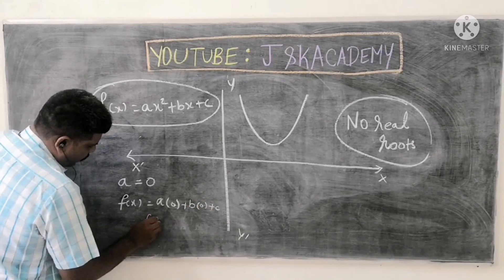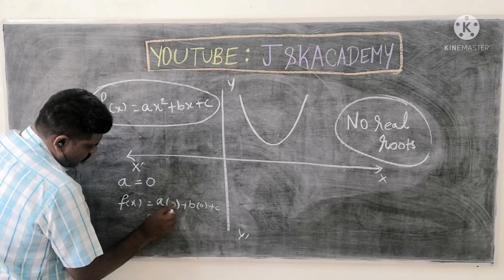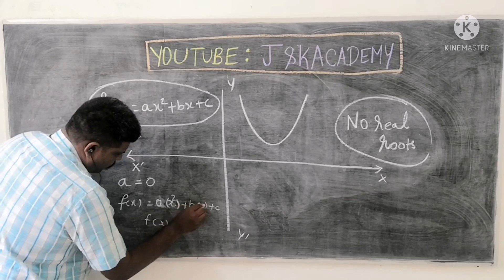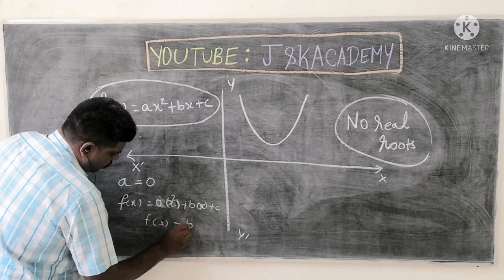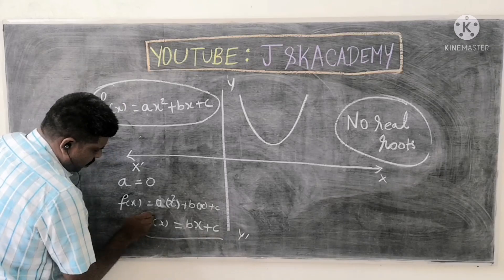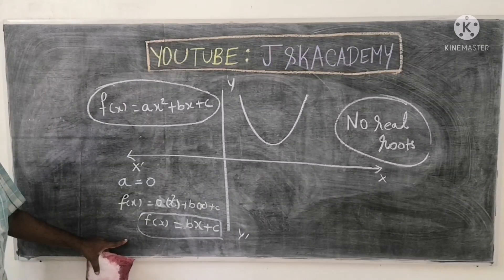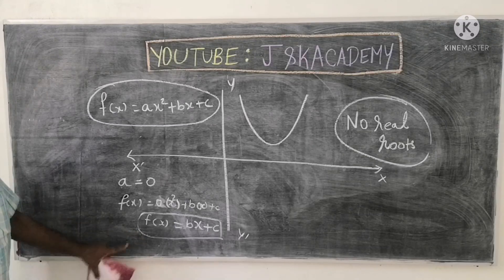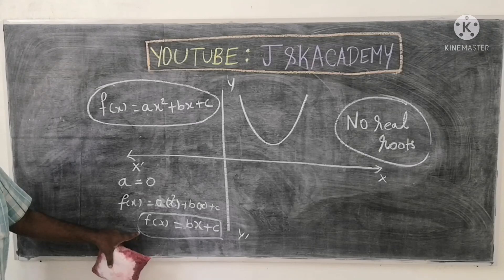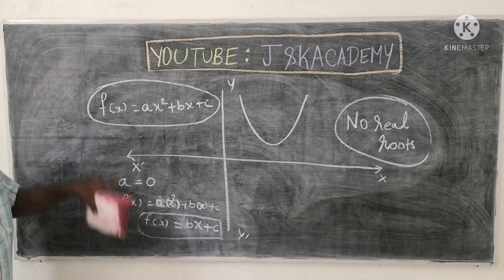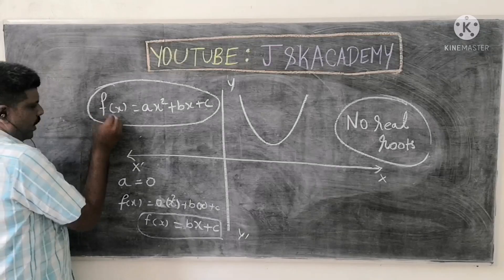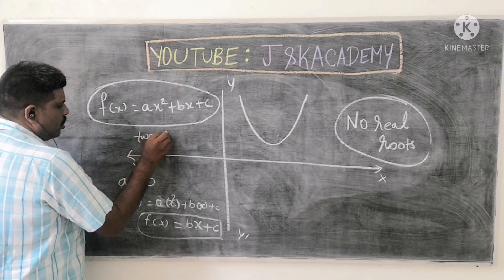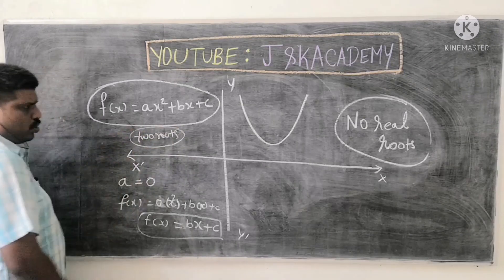F(x) equals 0, into x² plus Bx plus C. F(x) equals Bx plus C. So that is not a parabola, that's a straight line. That is linear equation. Quadratic equation has two roots. Binomial, two roots.